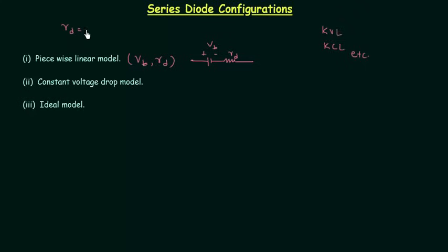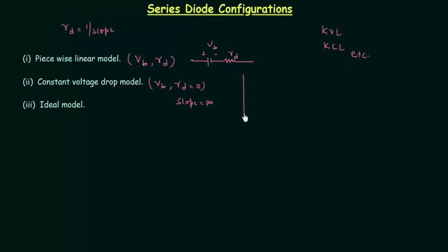Rd is equal to 1 divided by the slope of the curve. In the constant voltage drop model, Vb is present but Rd is equal to 0, because this resistance is very small compared to the resistance of other elements in the circuit. When Rd equals 0, this implies the slope of the curve is equal to infinity. If we draw the VI characteristics for this model it will look something like this.